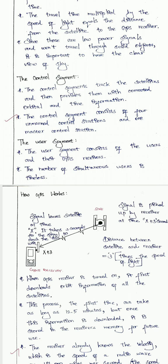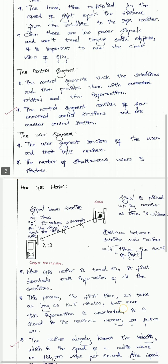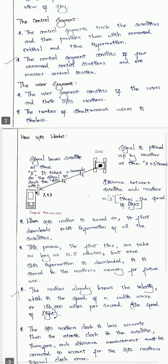The user segment consists of users and their GPS receivers. The GPS receiver is the user. The number of simultaneous users is unlimited.